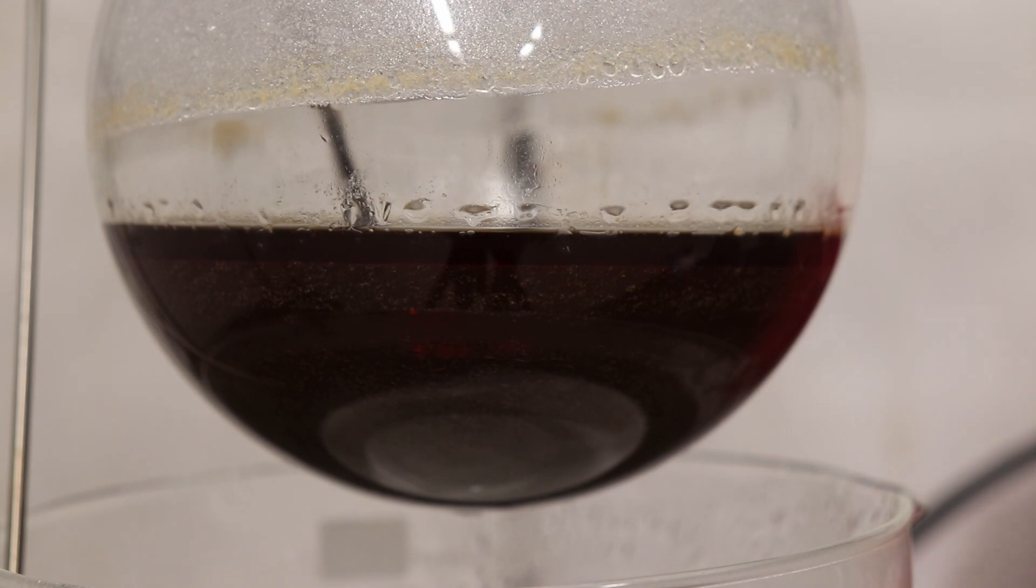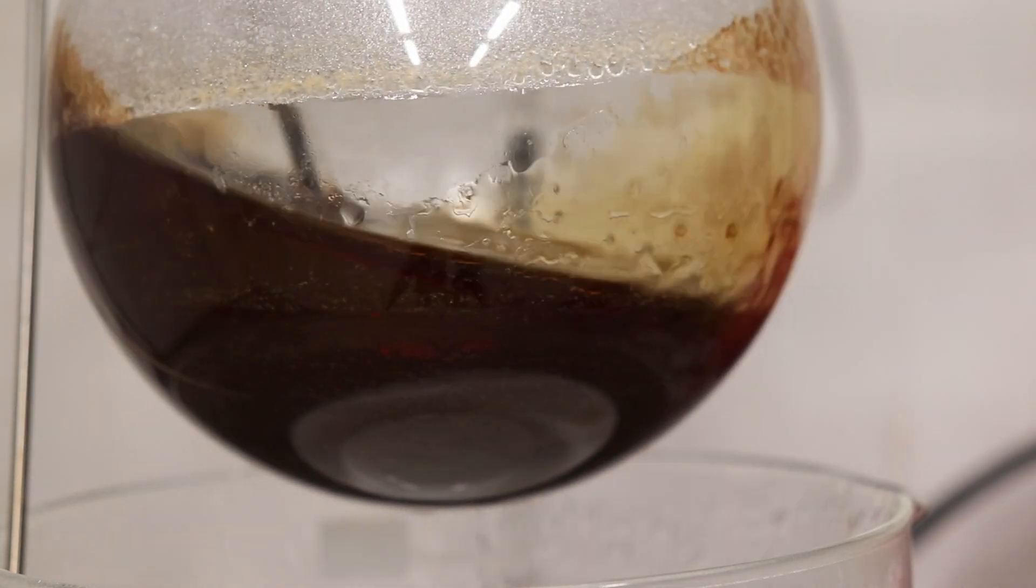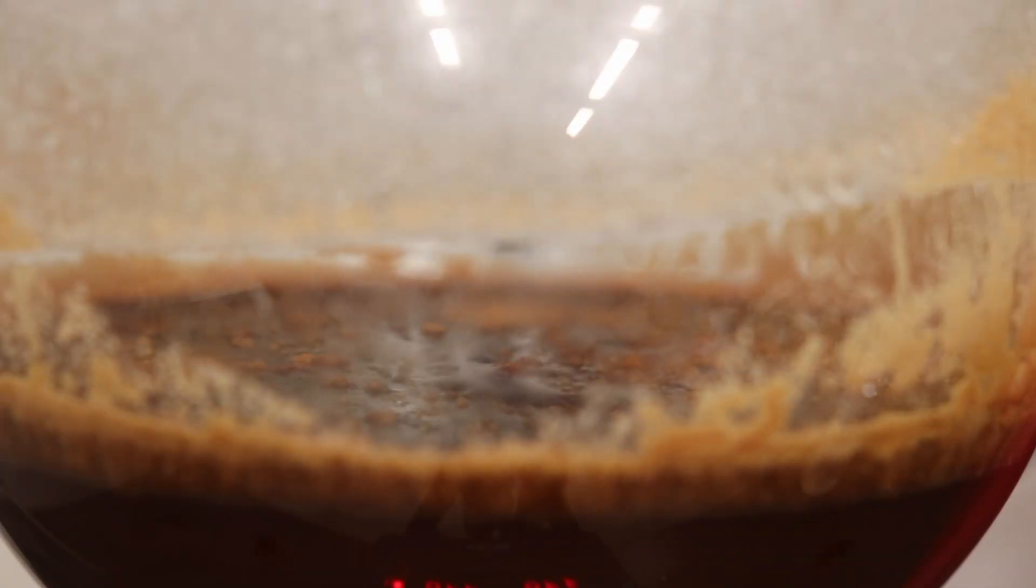Here you can see the lower aqueous layer and upper molten 2-methoxynaphthalene layer, as well as the film of crystalline 2-methoxynaphthalene deposited on the walls of the flask. The mixture was then allowed to cool to room temperature, which caused the 2-methoxynaphthalene layer to solidify in the flask.